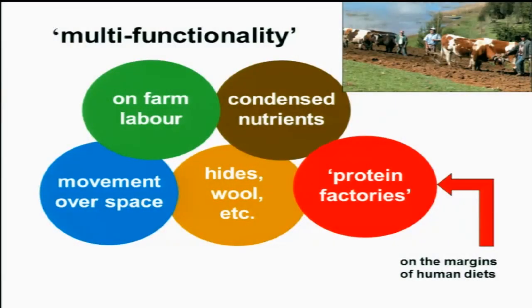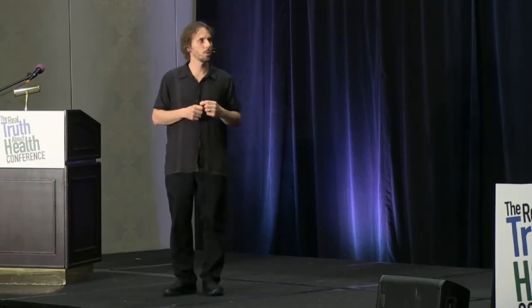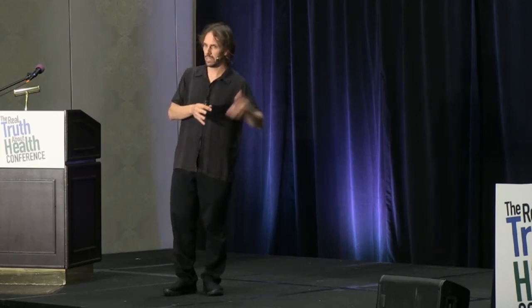There has been a fundamental rupture of the historic place that farm animals had in mixed agricultural systems, and an obliteration of multifunctionality. Now the sole function of animals in industrial livestock systems is to put on flesh as quickly as possible, or pump out milk and eggs as quickly as possible. They no longer return condensed nutrients to land, no longer have a role in moving things over space, and no longer contribute to on-farm labor. They are designed simply to pump out flesh, milk, and eggs as quickly as possible. The way they generate protein is fundamentally different from the historic place animals had in mixed farming systems.